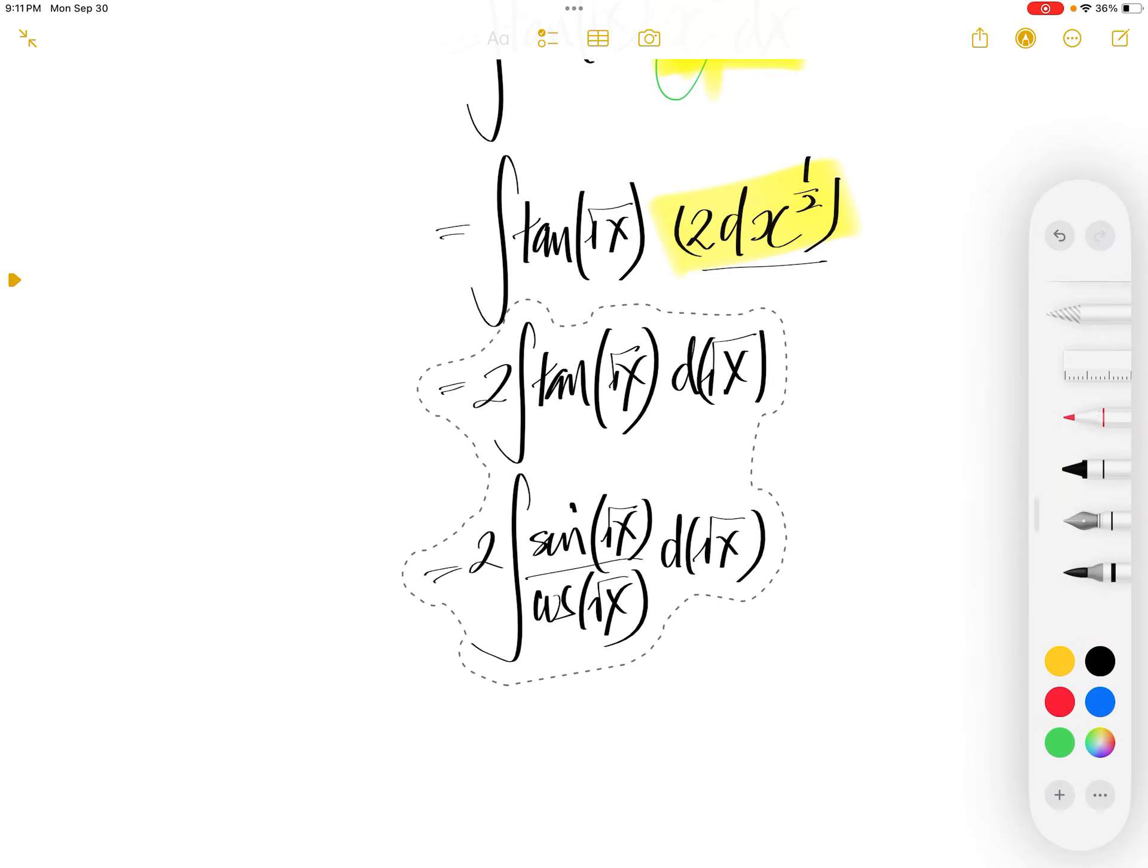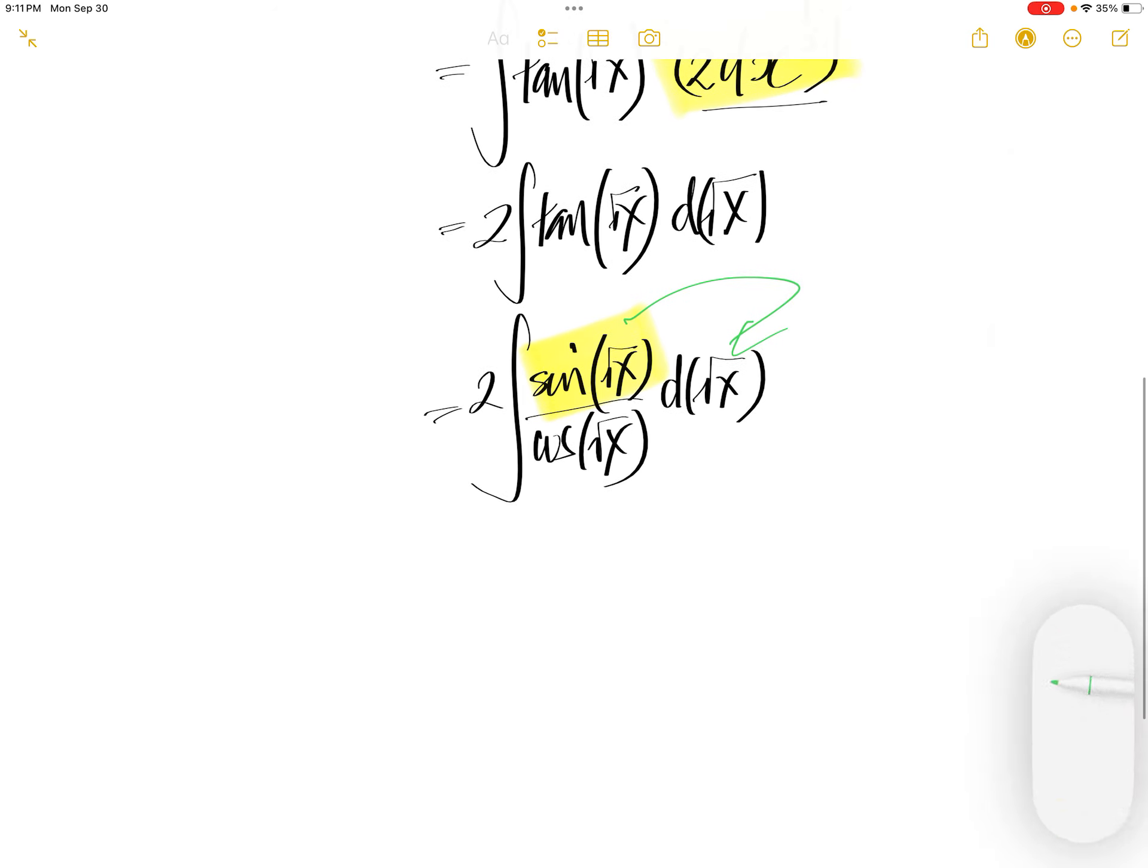Now, what we can do is we can push this guy into d square root x. You will get the derivative of cos square root x is negative sine square root x, d square root x.